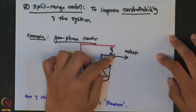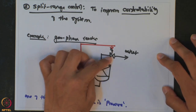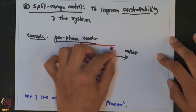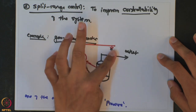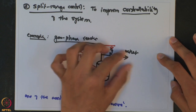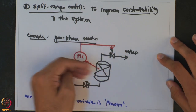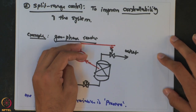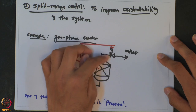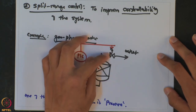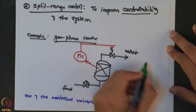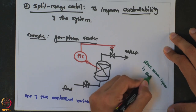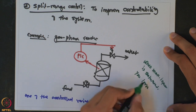When the valve is completely open, it is as good as having no valve — the entire pipeline carries vapor out. But in a runaway situation where a lot of vapor is being generated, it may not be sufficient to maintain pressure; pressure will keep building because there is no way to manipulate it anymore. You have lost controllability because the manipulated input is saturated. When the manipulated input is saturated, you lose controllability.